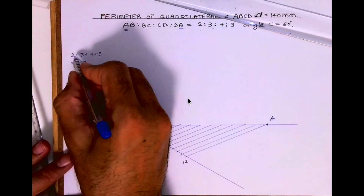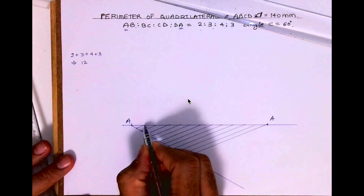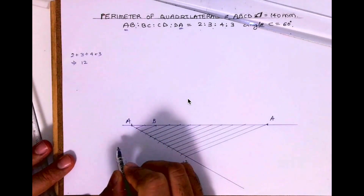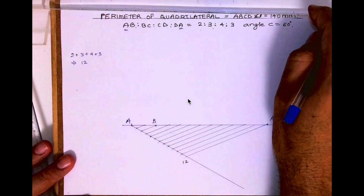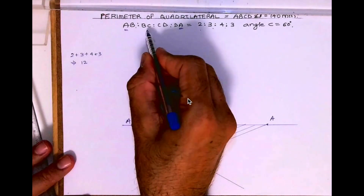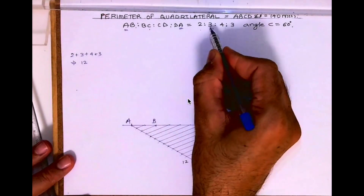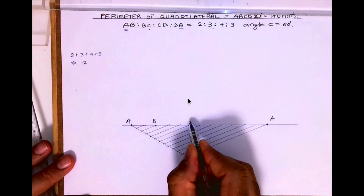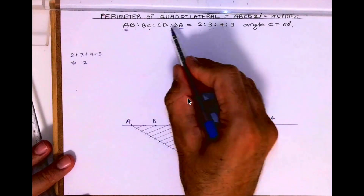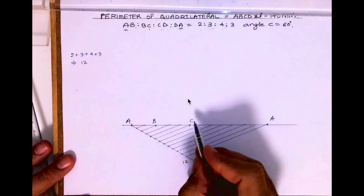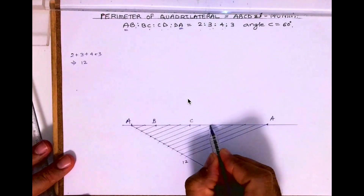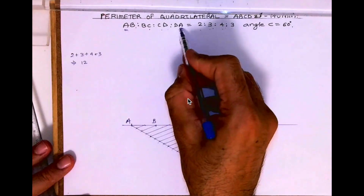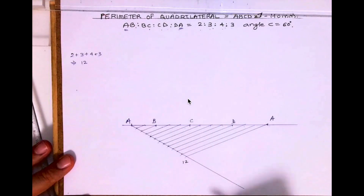Now after dividing into 12 parts, first we'll mark AB, which is 2 parts — so at position 2 we'll write B. Then 3 parts for BC — 1, 2, 3 — over here I'll write C. Then CD is 4 parts — 1, 2, 3, 4 — I'll write D. Then again 3 parts — 1, 2, 3 — for DA.